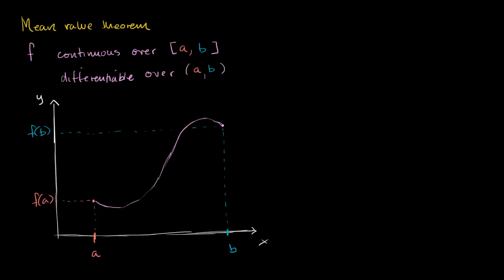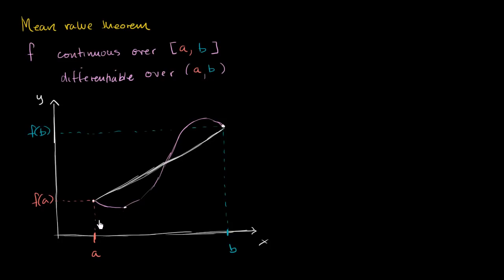Now what does that mean visually? The average rate of change between point a and point b is going to be the slope of the secant line. So this is the secant line — think about its slope. All the mean value theorem tells us is that at some point in this interval, the slope of the tangent line is going to be the same as the slope of the secant line. And we can see, just visually, it looks like right over here the slope of the tangent line equals the slope of the secant line — and also right over here as well.